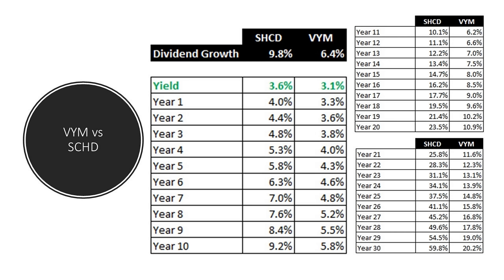VYM versus SCHD comes right down to our conversation about dividend growth. SCHD actually starts out with a higher yield — that's not good when the whole purpose of VYM should be high yield, so VYM starts behind in that race. But looking at dividend growth: over the last 10 years SCHD is at 9.8% growth. At year 20, SCHD's yield on cost would be around 23.5% versus VYM at 10.9%. At year 30, you're at a yield on cost of close to 60% for SCHD versus VYM at just 20%. SCHD is probably the better choice for investors with long-term horizons.